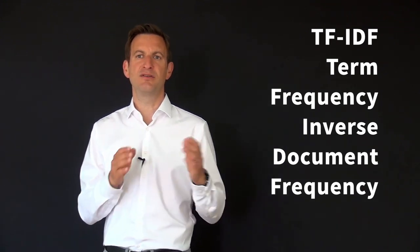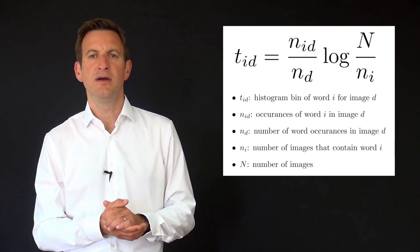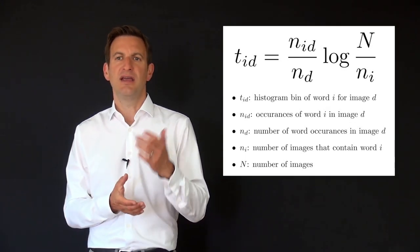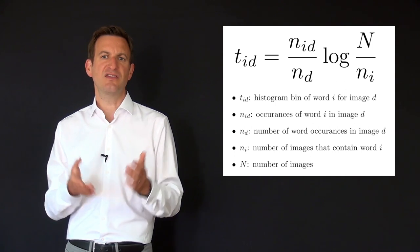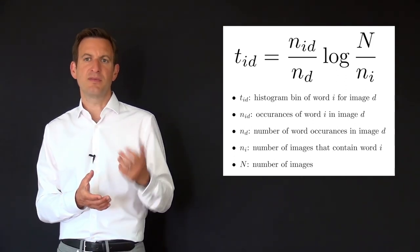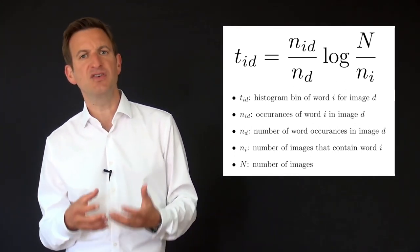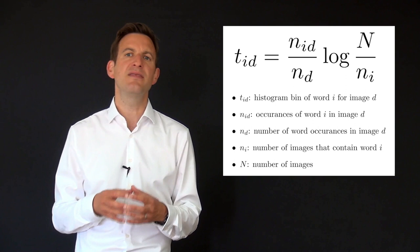TF-IDF stands for term frequency inverse document frequency and is shown over here. The first term in this equation is the relative occurrence of a word in an image such it is our histogram just normalized to one. This term is then multiplied with the logarithm of the inverse percentage of images in our database that contain the word at all.